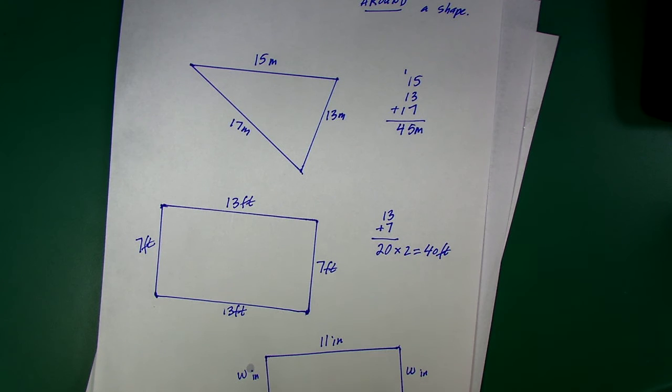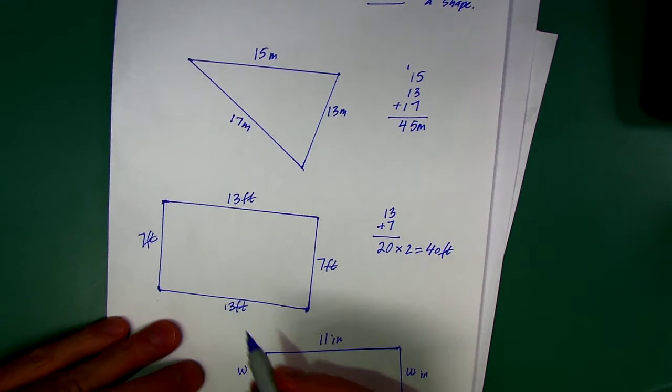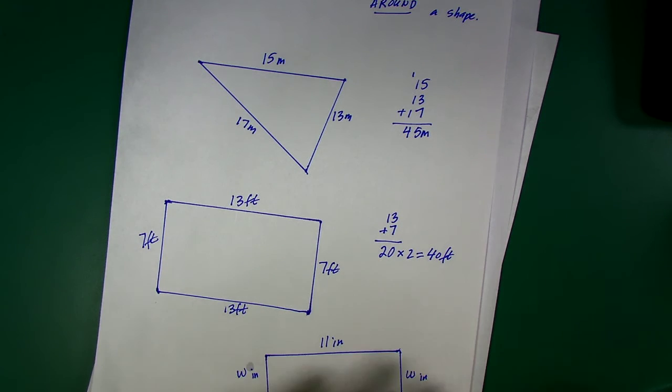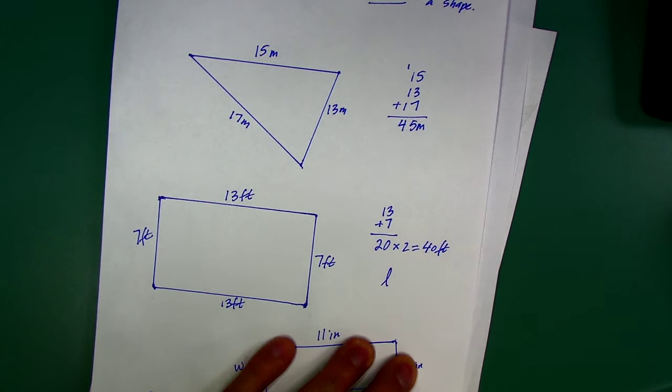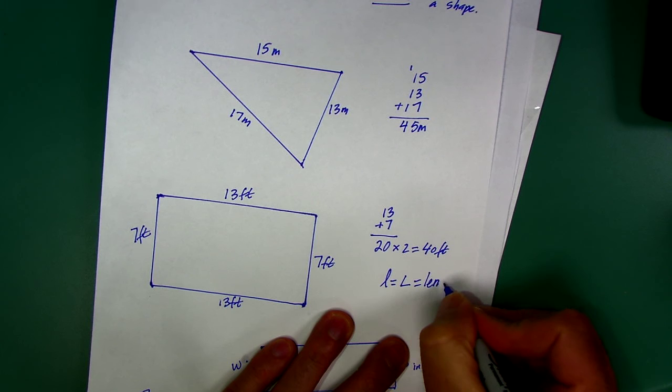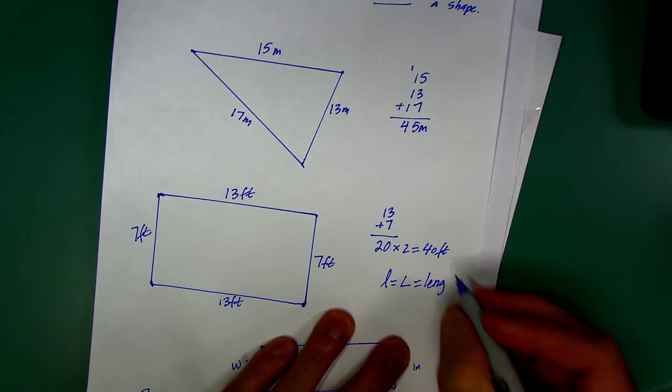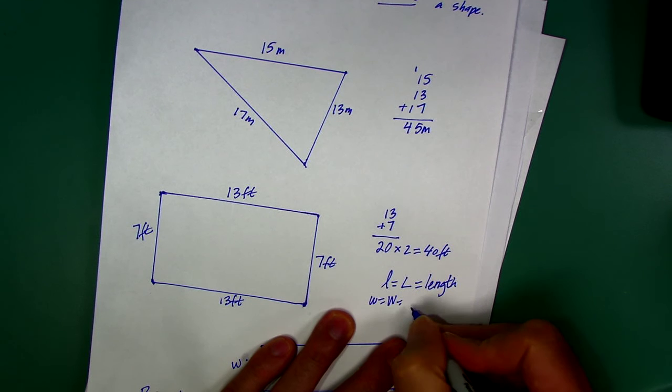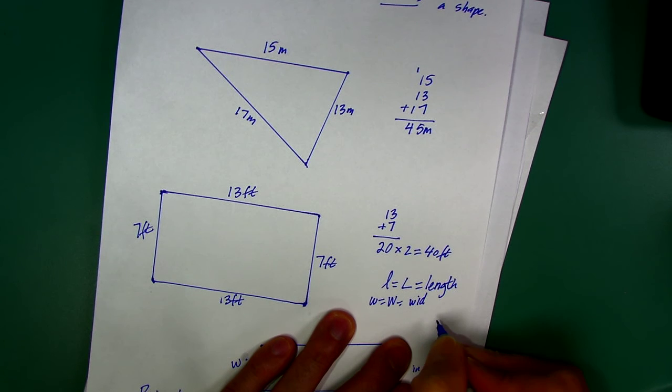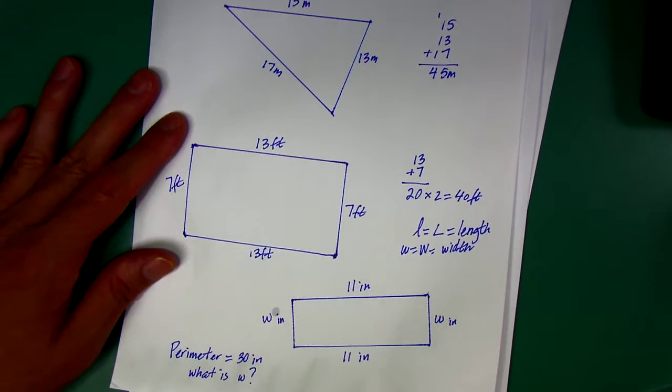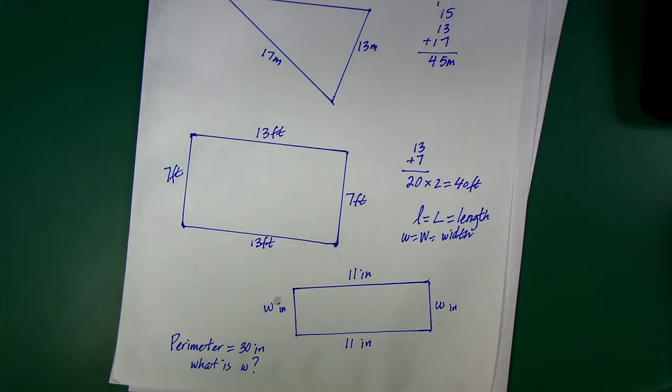Sometimes, when we get into geometry, they label the sides of a rectangle, the length and the width. They use sometimes an L or a W. That usually stands for the length. L-E-N-G tells you how long it is. And W stands for width. On this rectangle, this is a puzzle problem for you. I'm telling you the perimeter is 30 inches. What is W?